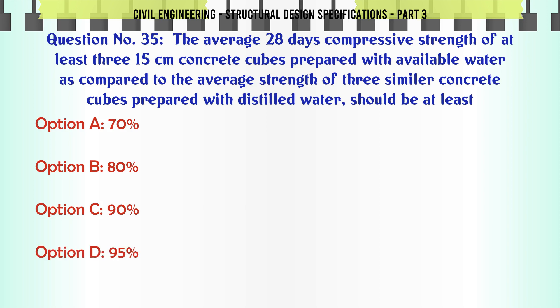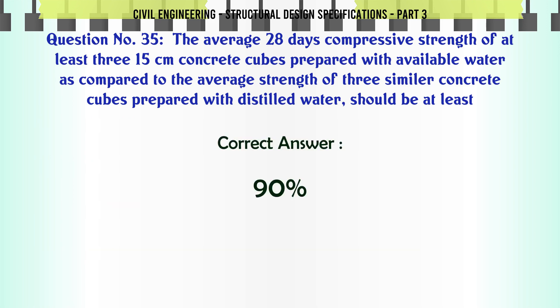The average 28-day compressive strength of at least three 15 cm concrete cubes prepared with available water, as compared to the average strength of three similar cubes prepared with distilled water, should be at least: a. 70%, b. 80%, c. 90%, d. 95%. The correct answer is: 90%.